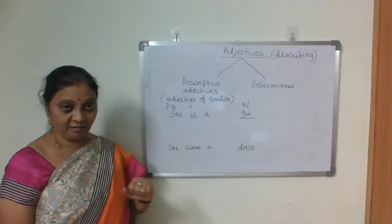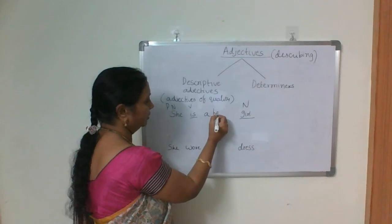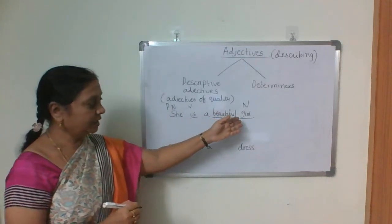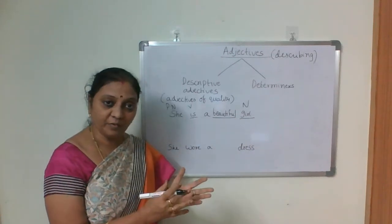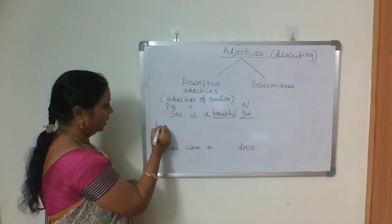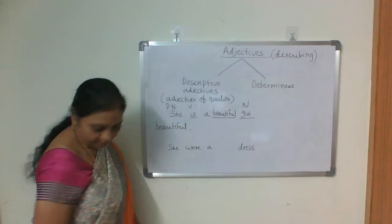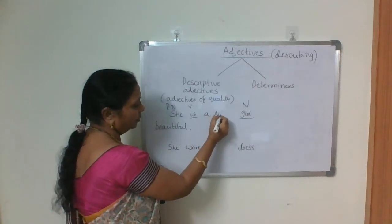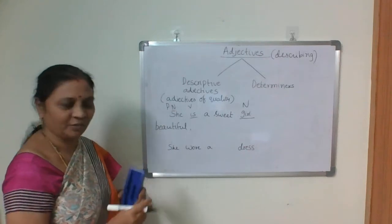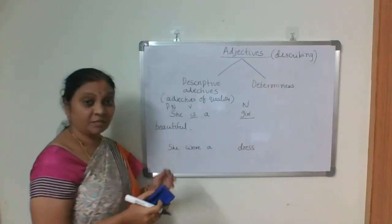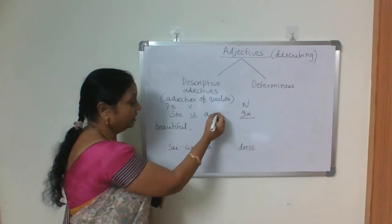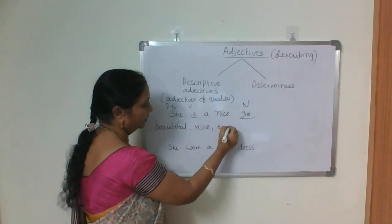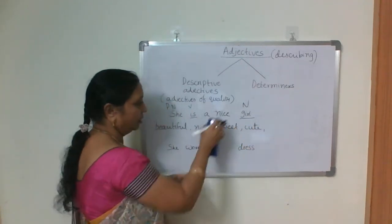Let us start describing this girl. She is a beautiful girl — so beautiful becomes an adjective. She is a nice girl. She is a sweet girl. She is a cute girl. She is a young girl. All these — nice, sweet, cute — are adjectives. Then we talk about the size: she is a short girl, or fat girl, or tall girl. Tall, short, small, big — those are also adjectives.